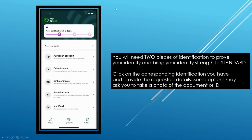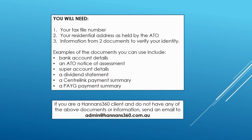You will need two pieces of identification, such as a driver's licence or a Medicare number to do so. Once you've attained your standard identity strength, you can move on to step two. Gather some documents that will verify your ID. You will need your tax file number and your residential address as held by the ATO.